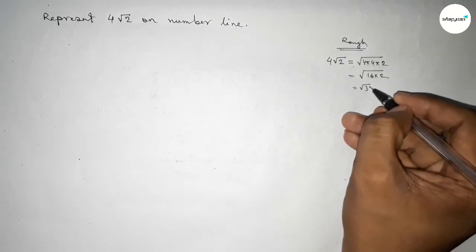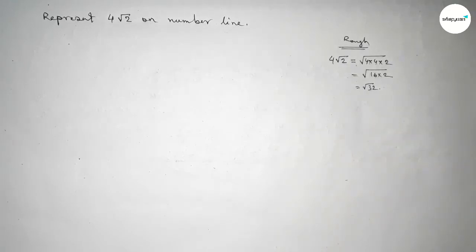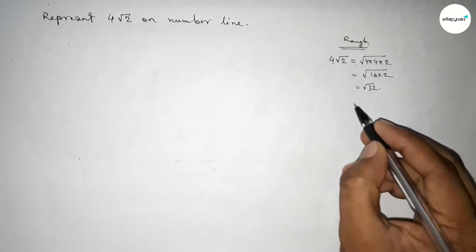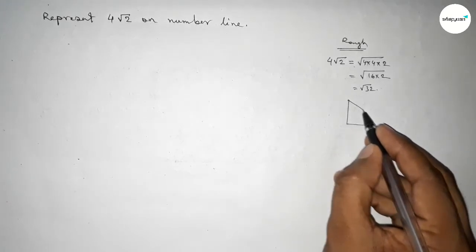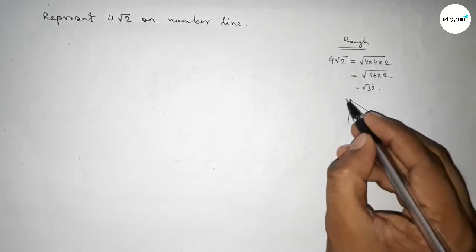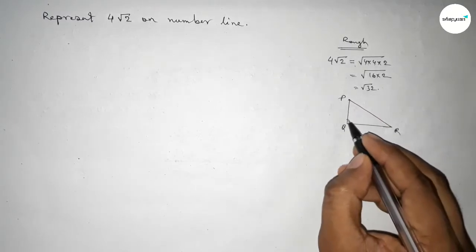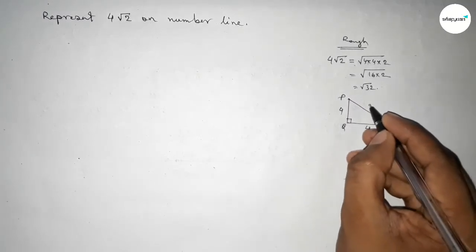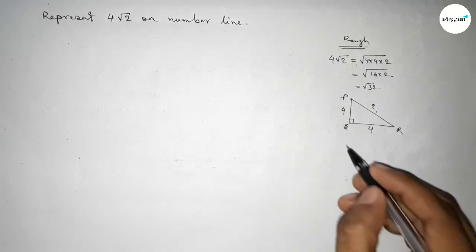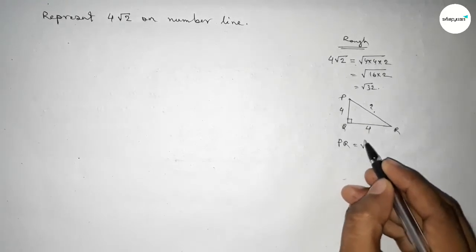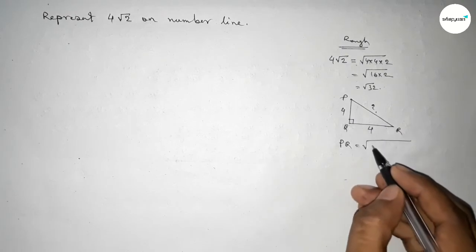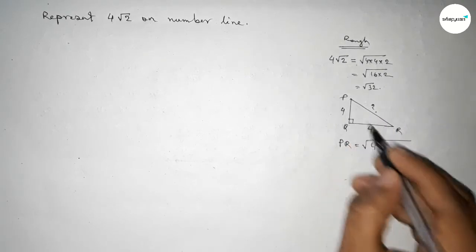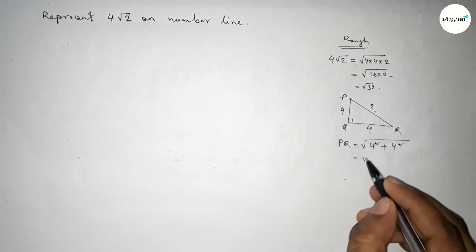So this is root 32. Now roughly discussing root 32, so if there is a right angle triangle, first roughly drawing here a right angle triangle PQR with base equal to 4 and height equal to 4. Then what is hypotenuse? By Pythagoras theorem, hypotenuse equal to root over base square plus height square, so 4 square plus 4 square.